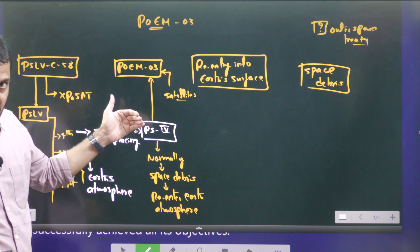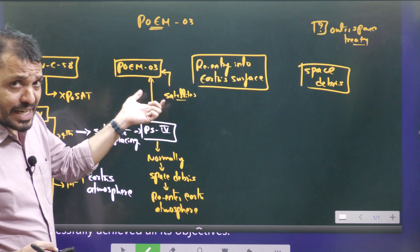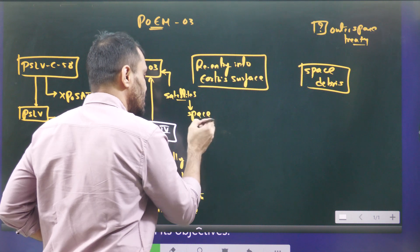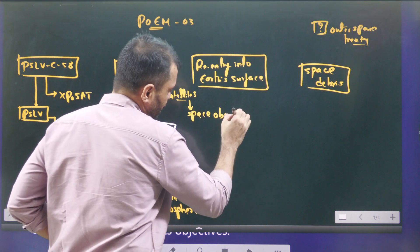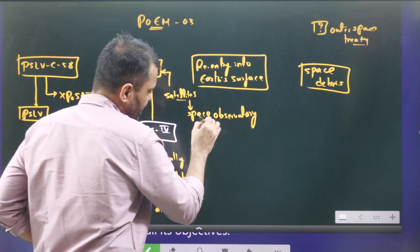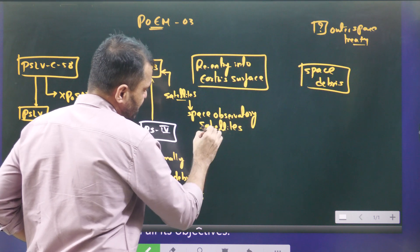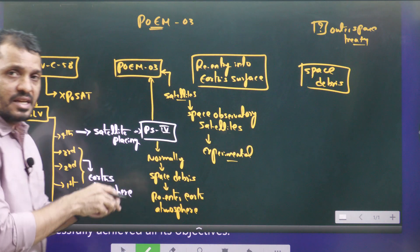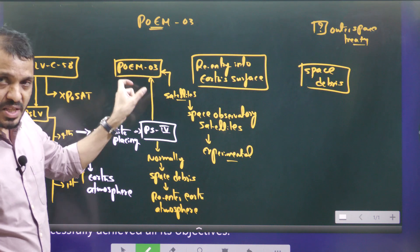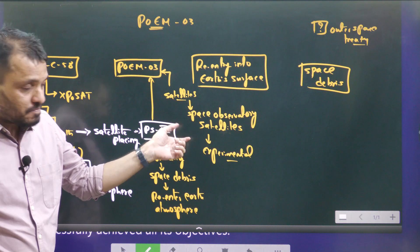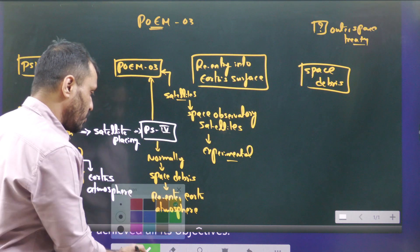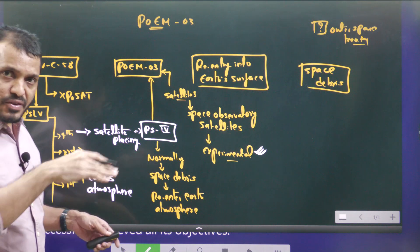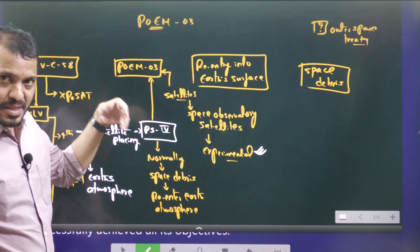The PS4 stage, with POEM 3 attached, remained at around 300 kilometers from Earth's surface for 6 months. The satellites attached to POEM 3 are space observatory satellites and experimental ones. These experimental satellites attached to the POEM 3 platform were able to conduct their research for 6 months, meaning their research objective was achieved — that's point number 1.